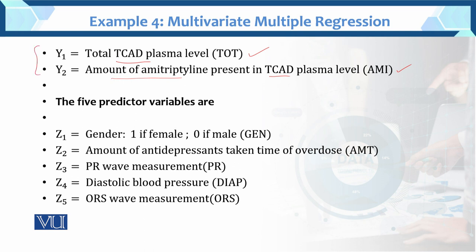So these are the two dependent variables and we have five predictor variables — five independent variables. Z1 is gender: if female, we code it as 1; if male, we code it as 0. Z2 is the amount of antidepressant taken at time of overdose, with notation AMT.